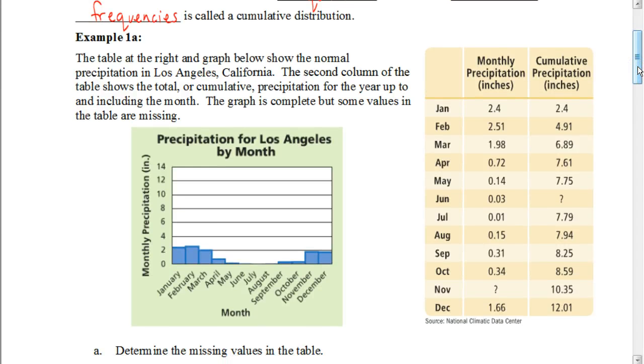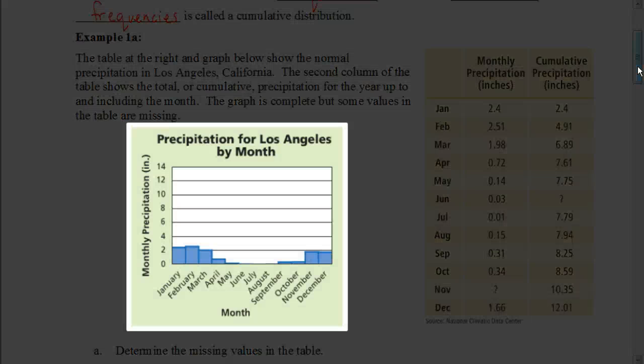Here it says a table at the right and graph below show the normal precipitation in Los Angeles, California. The second column of the table shows a total or cumulative precipitation for the year up to including the month. The graph is complete, but some values in the table are missing. So we're going to fill out that table, but first let's look at the situation here. You can see it's a properly made graph because it has a nice title: precipitation for the Los Angeles by month. We can see the months along the x-axis with the monthly precipitation on the y-axis. We can easily read that to see that in February, Los Angeles receives a little over two inches of precipitation, where in June, July, and August, they receive very little, if any, precipitation during those three months.